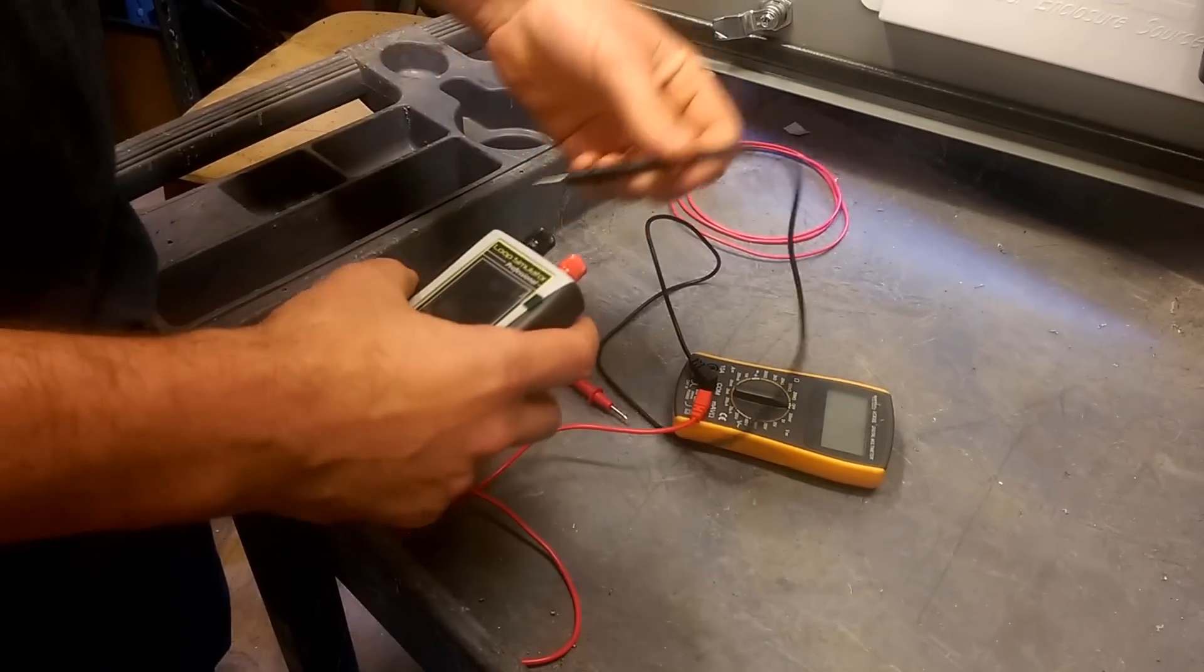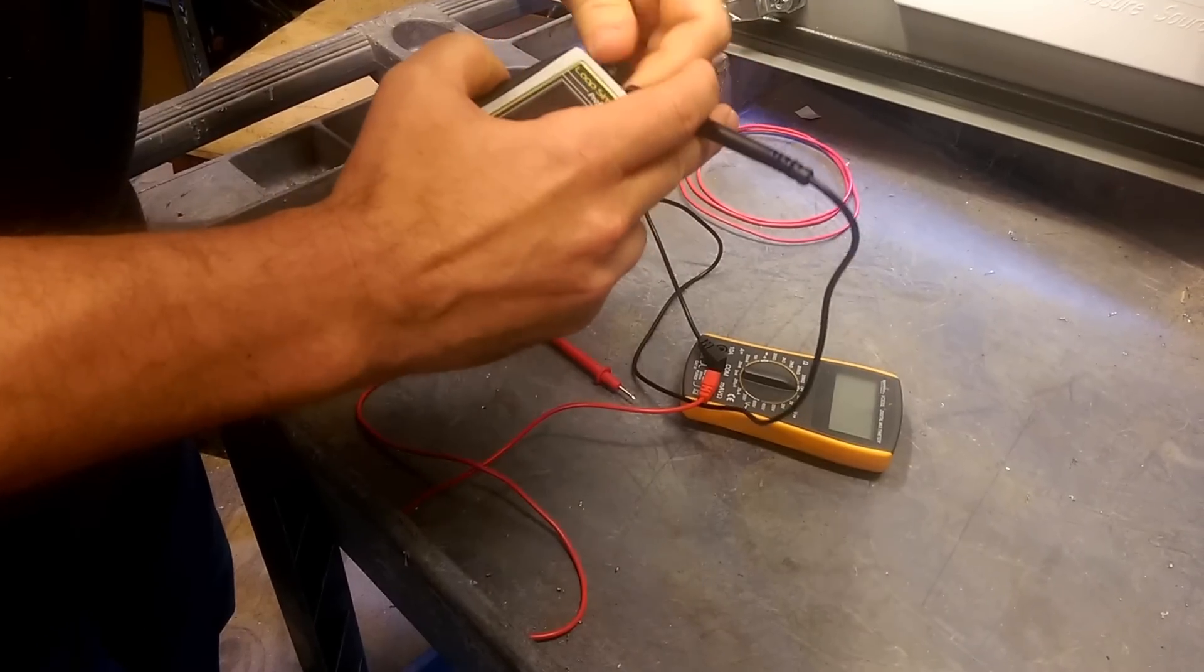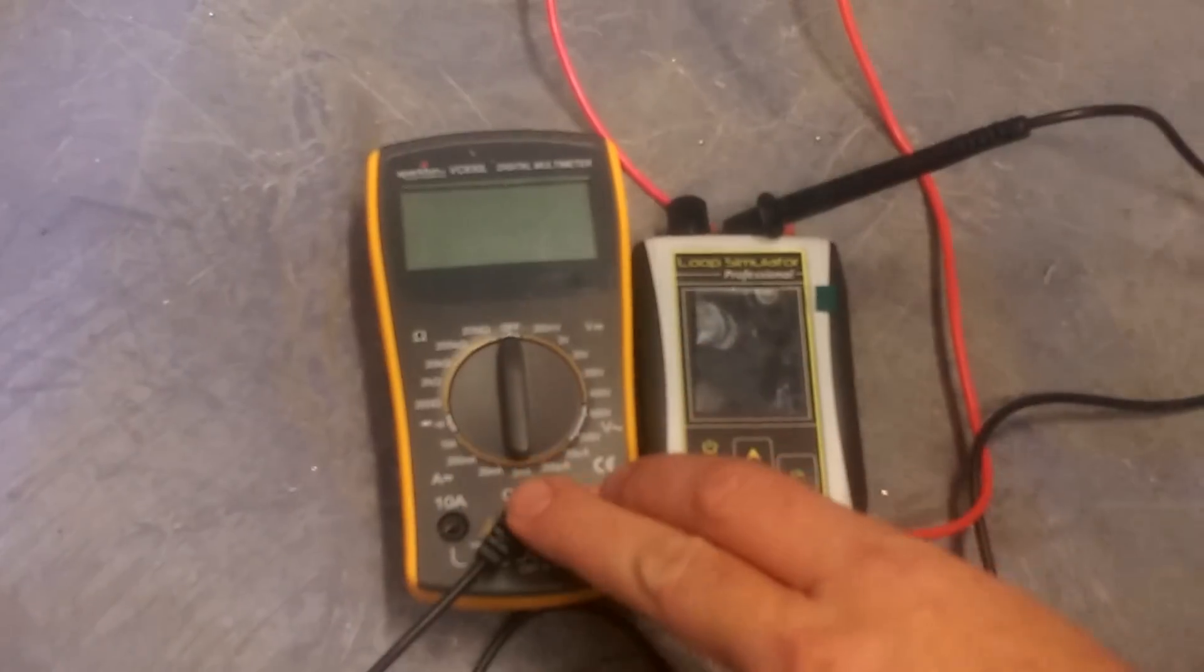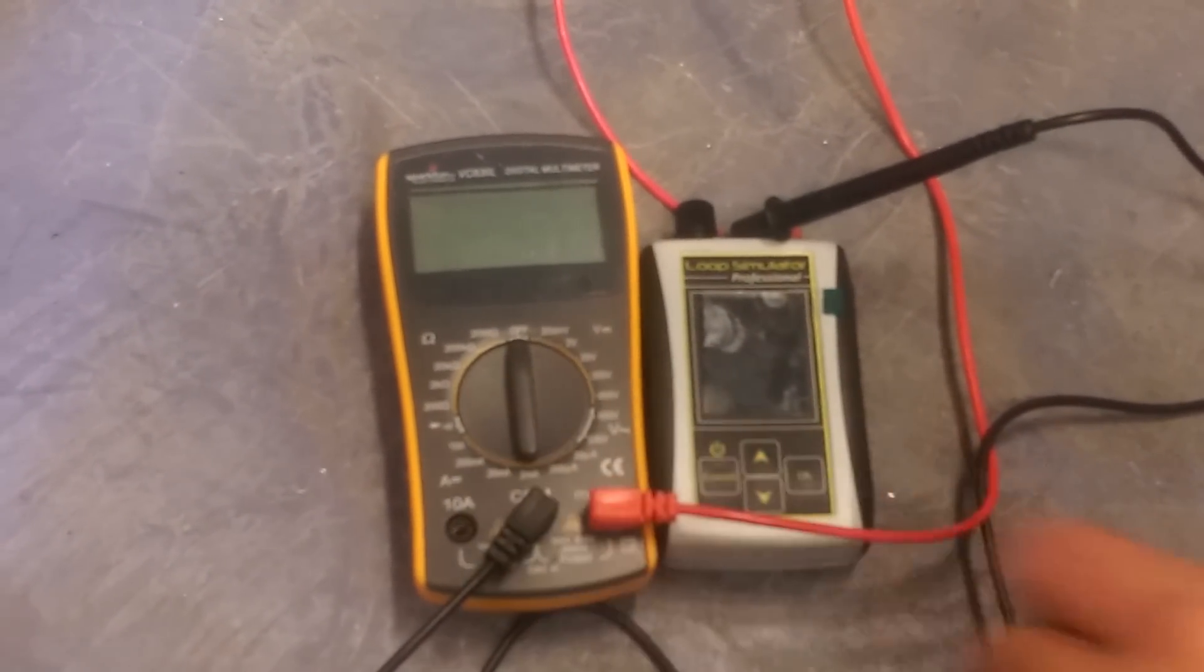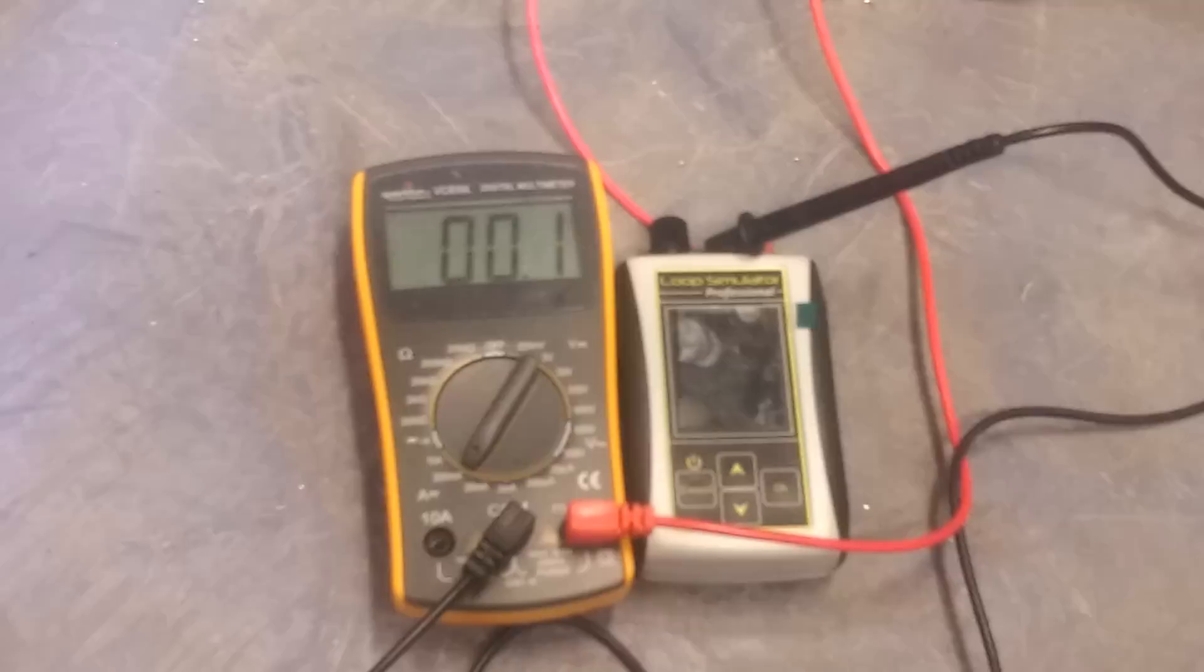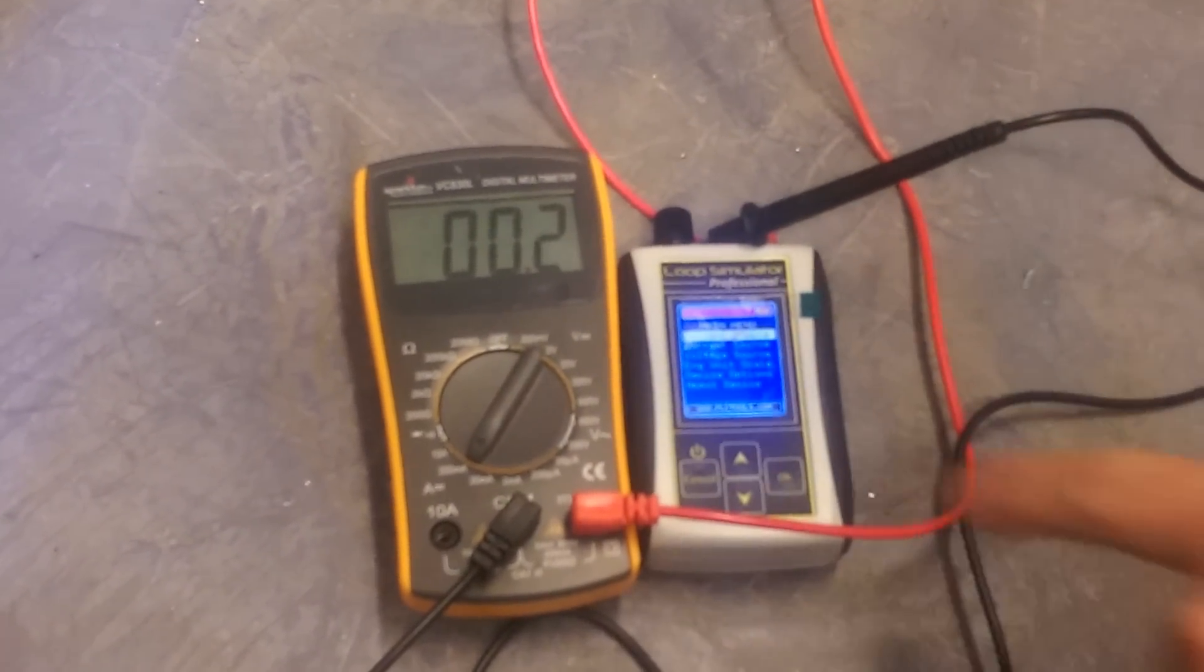Just as our circuit diagrams show, we're going to put the black lead from our voltmeter into the black terminal of our simulator. We're going to put a red wire into the red terminal. Make sure you have your leads in the proper position for a milliamp reading. And turn your voltmeter to milliamps. You see we have a zero milliamp signal. And I'll turn on our simulator.